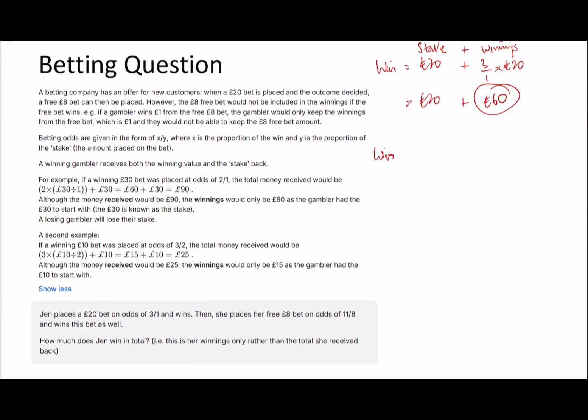I didn't really have to include the stake each time, but I'm just doing it to illustrate the point, so it's £60. And then this is the win again, but this time with the free bet. Wins are stake plus winnings, but of course we have no stake here because this is a free bet, so it's just the winnings. That's going to be £8 times 11/8, so 8 times 11 over 8 is £11. Therefore, if you add up both of these values, the 60 plus the 11, you get £71. The answer is £71.